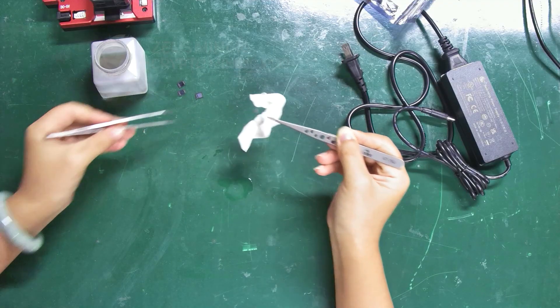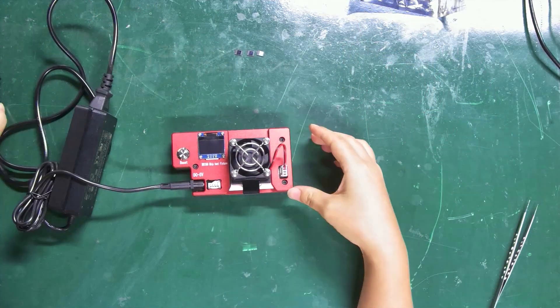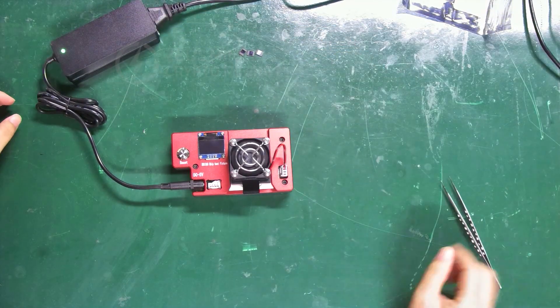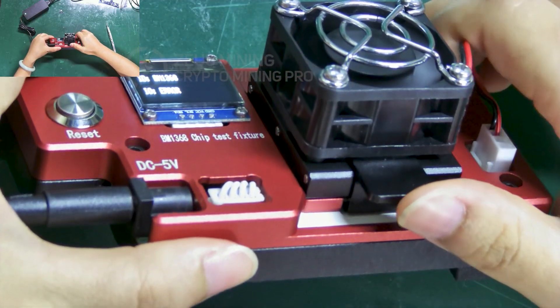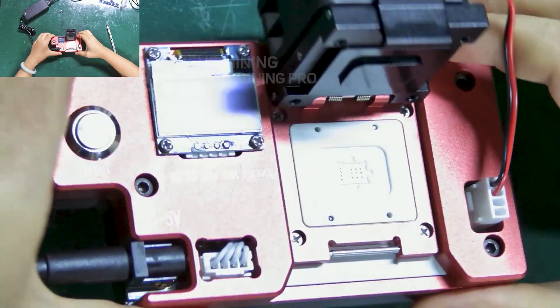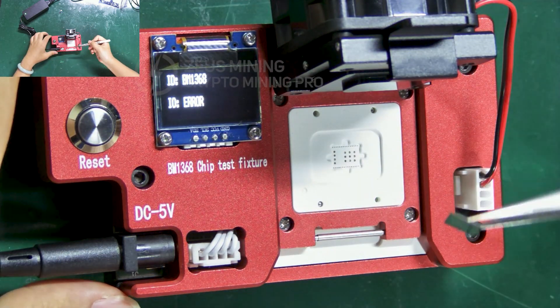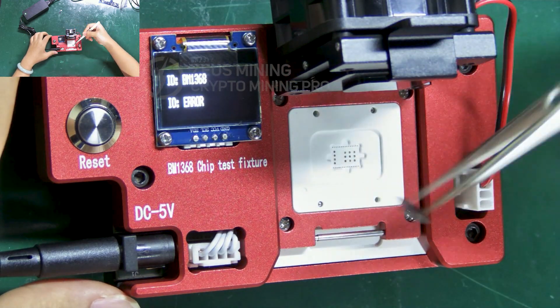The cleaning is completed. Now start to power on the tester. Then open the test socket and put the chip in for testing. At this time, the positive and negative poles of the chip cannot be reversed, otherwise the test result will be inaccurate.